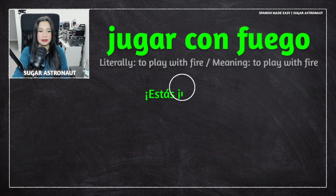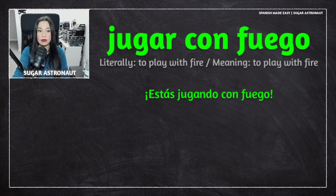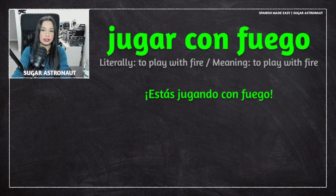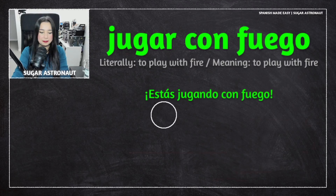The first example is estás jugando con fuego. This is a very simple sentence, nothing too complicated. You're just saying estás jugando con fuego. What does this mean?